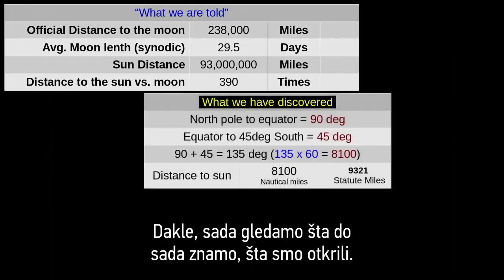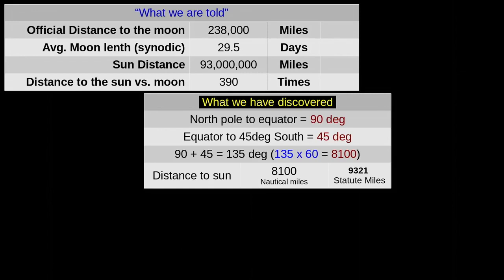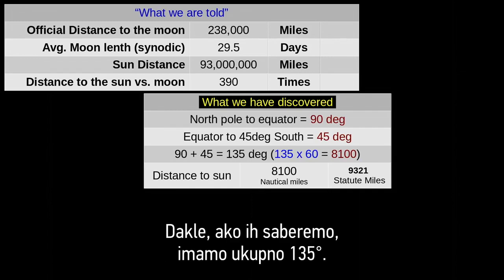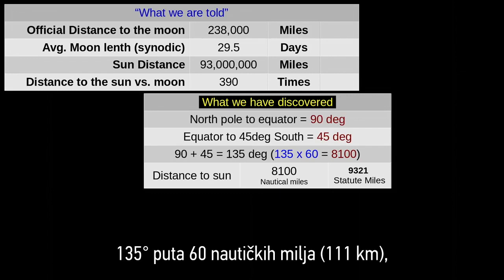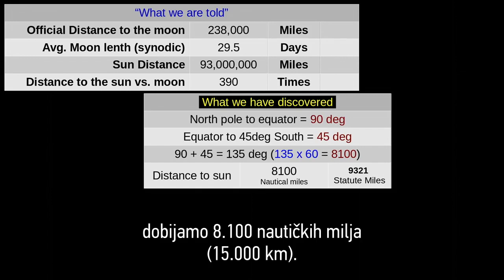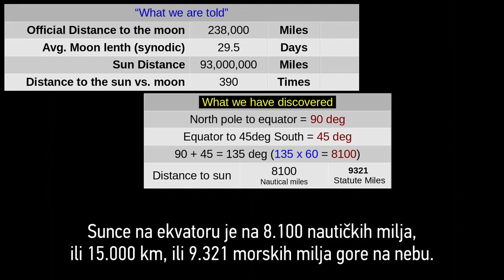So, now we look at what we know so far — what we have discovered. We know from the north pole to the equator is 90 degrees. We know from the equator to 45 degrees south is another 45 degrees. So, if we add them up, we have a total of 135 degrees. 135 degrees times 60 nautical miles — because 1 degree is equal to 60 nautical miles — comes out to 8,100 nautical miles. So, according to this, the sun at the equator is 8,100 nautical miles, or 9,321 statute miles, up in the sky.